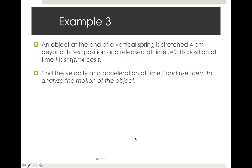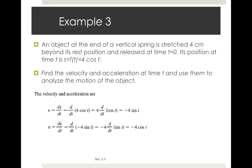An object at the end of a vertical spring is stretched 4 centimeters beyond its rest position and released at time equals 0. Its position at time t is s equals f(t) equals 4 cosine t. Find the velocity and acceleration at time t and use them to analyze the motion of the object. We are going to find the derivative of 4 cosine t. I'm going to pull the 4 out front. And then I'm going to have 4 times the derivative, which means I'm going to have sine t inside. And the derivative of sine is cosine, so I'm going to get negative 4 cosine t. And there's a picture of our function, velocity, and acceleration at time.